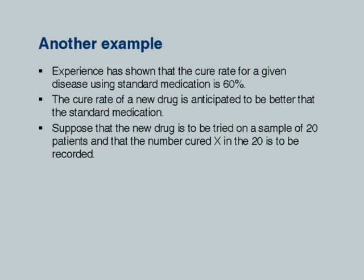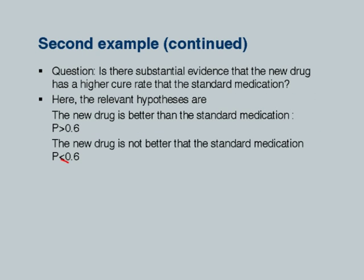For example, suppose the cure rate for a given disease using standard medication is 60 percent. A new drug is anticipated which somebody says has better properties than the standard one. The new drug is to be tried on a sample of 20 patients and the number cured X out of 20 is to be recorded. Suppose 12 out of 20 turned out okay — that is about the same as the old drug. We want something significantly better. Is there substantial evidence that the new drug has a higher cure rate than the standard medication?